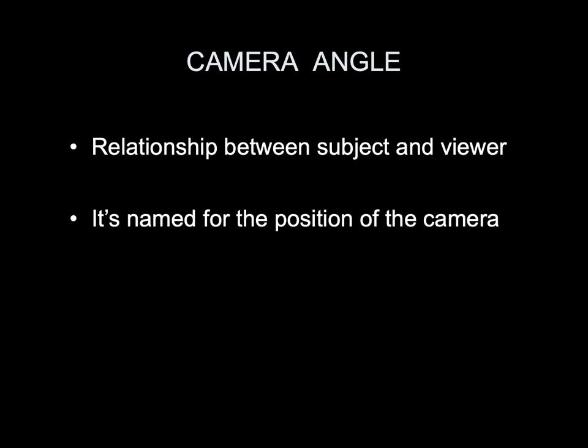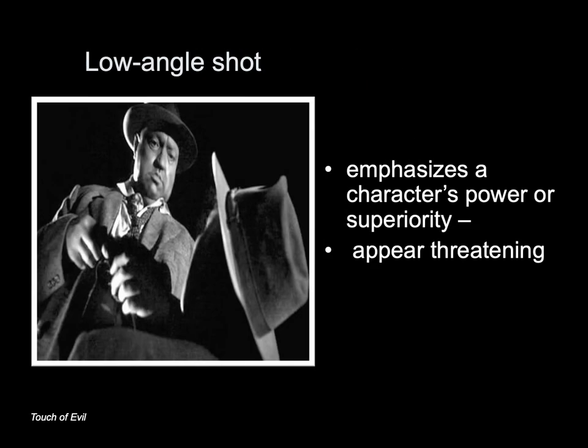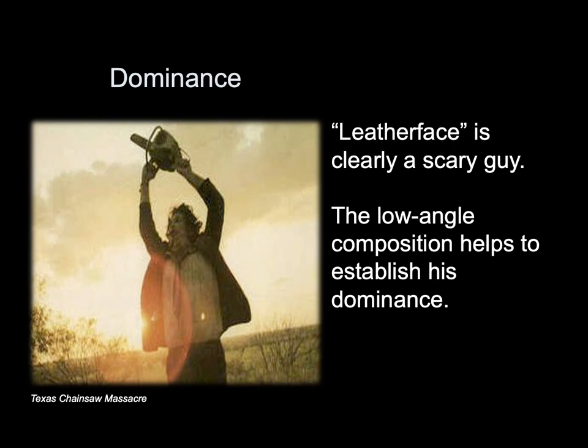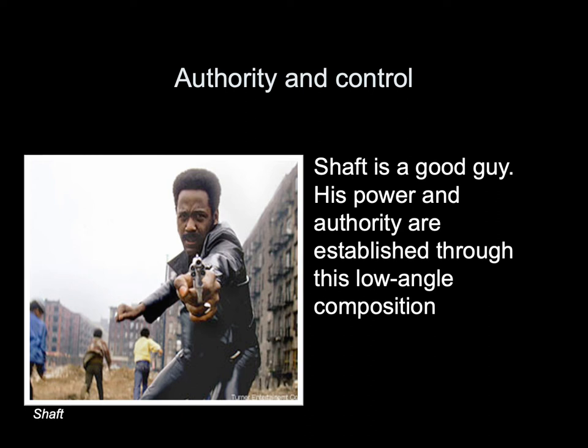Camera angle: the relationship between the subject and the viewer. A camera angle is named for the position of the camera. Low angle shot: emphasizes a character's power and superiority and can make them appear threatening. For example, Leatherface is clearly a scary character — the low angle composition establishes his dominance. Similarly, Shaft's power and authority is established through a low angle composition.